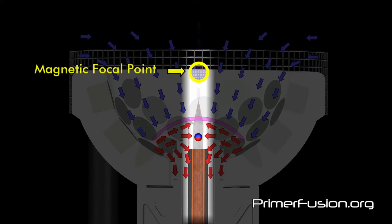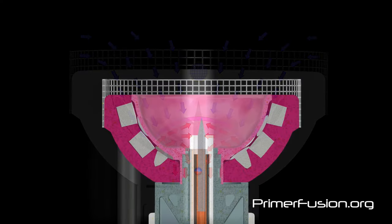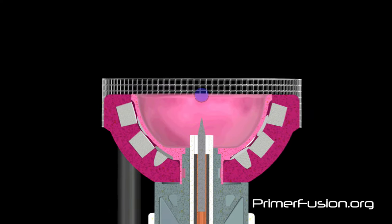This area is a unique magnetic zone that does not occur in any other magnetic field arrangement, and what happens in this zone is critical to the Primerfusion process.